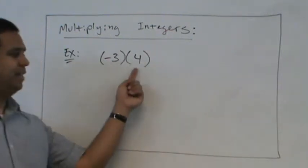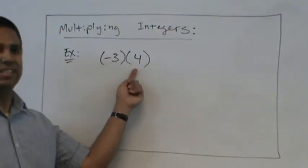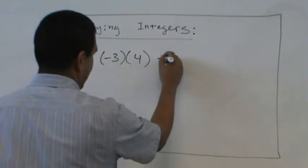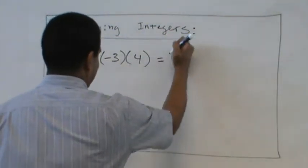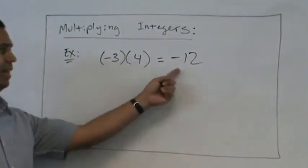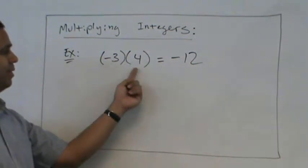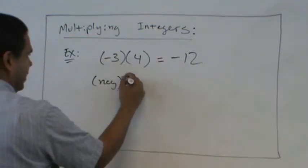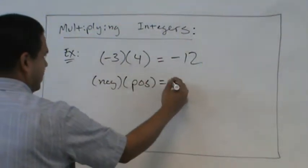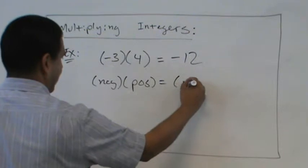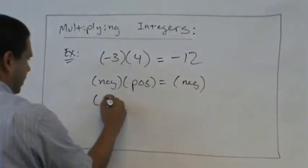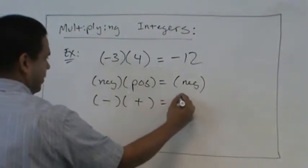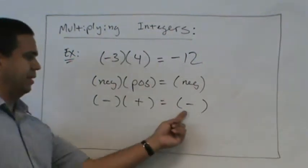What about a negative times a positive? Negative. That's negative. Very good. So we would get negative 12. So negative 3 times 4 is negative 12. So we know negative times positive is negative. Negative times positive is negative.